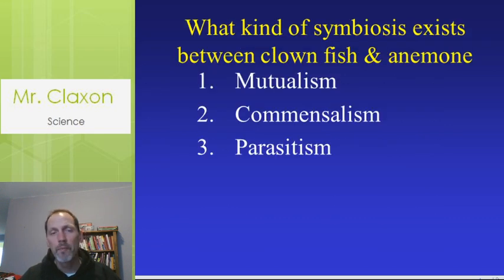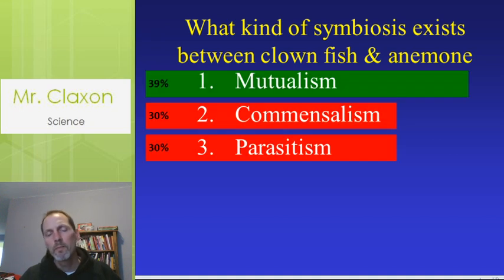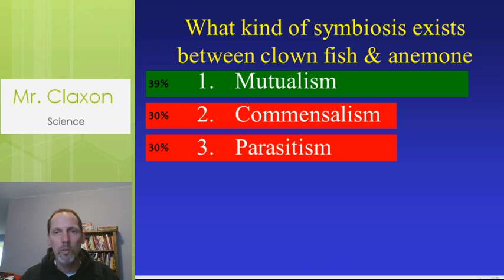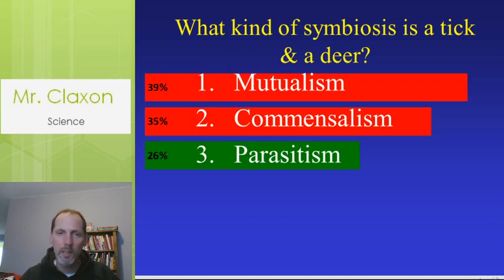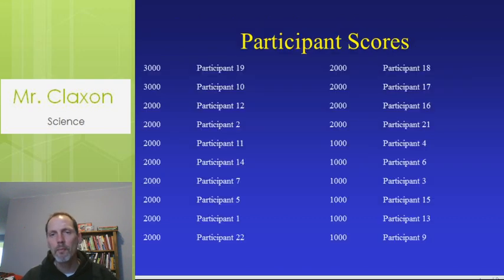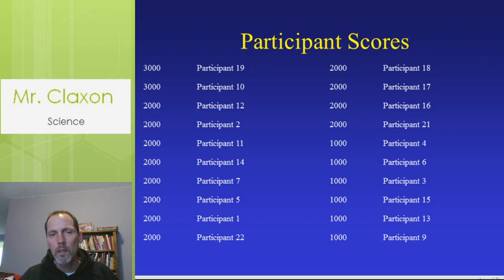The clownfish and the anemone — what kind of symbiosis was that? That is mutualism: the clownfish gets a safe place to live, and the anemone benefits because other fish are attracted to it. And finally, a tick and a deer — what kind of symbiosis would that be? If you were thinking parasitism, you are correct.